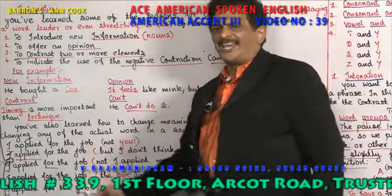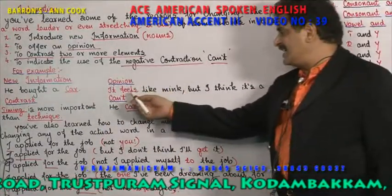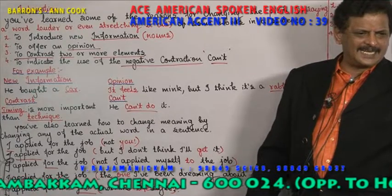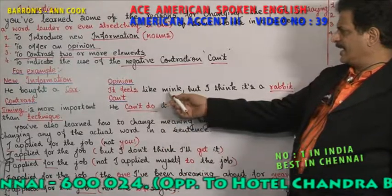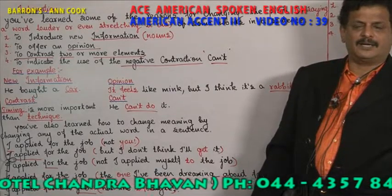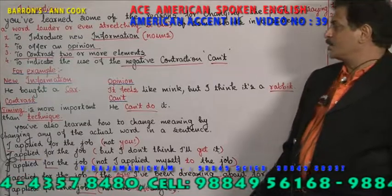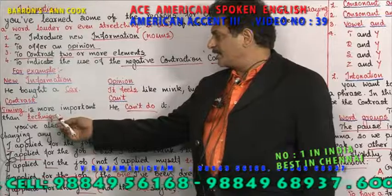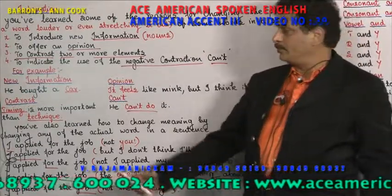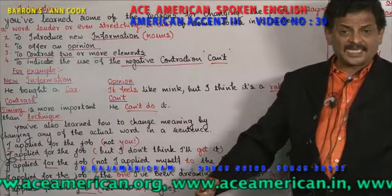For example, new information: 'He bought a car' — 'My friend bought a car.' Car is the new information. When you want to give your opinion: 'It feels like mink.' Mink is an animal. 'I feel like mink, but I think it is a rabbit.' For contrast: 'Timing is more important than technique.' The words 'timing' and 'technique' are contrasted. For negation: 'He can't do it' — stressing 'can't.'